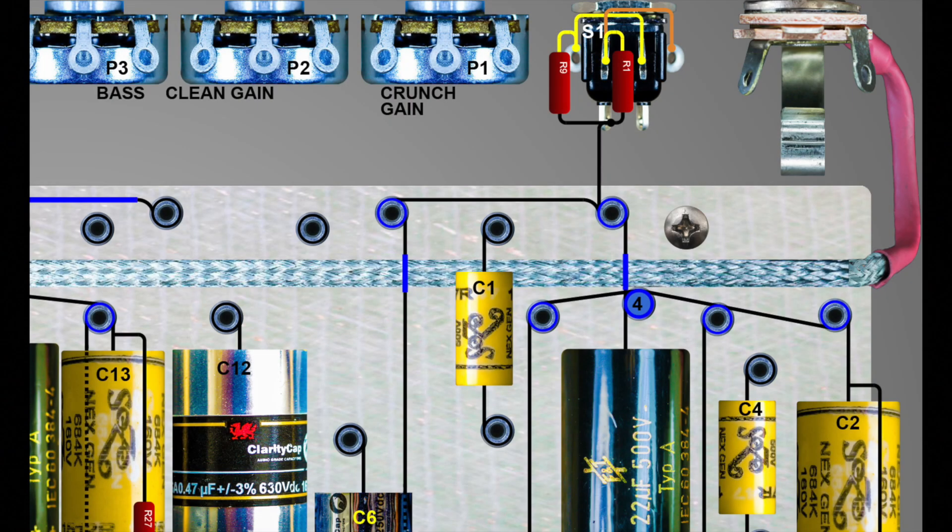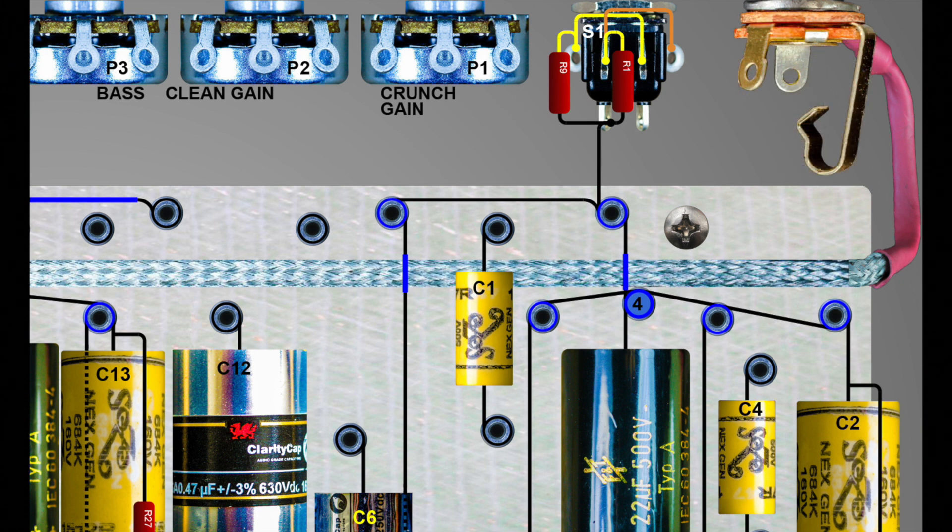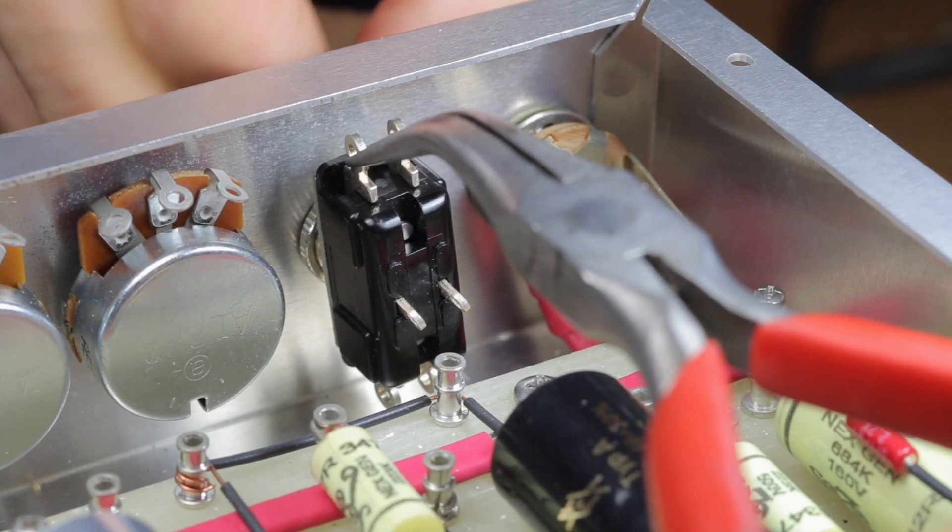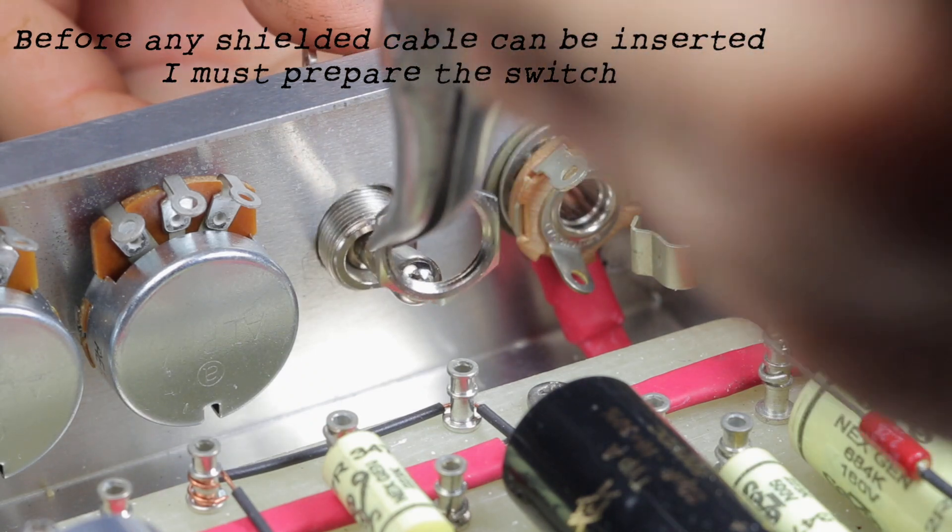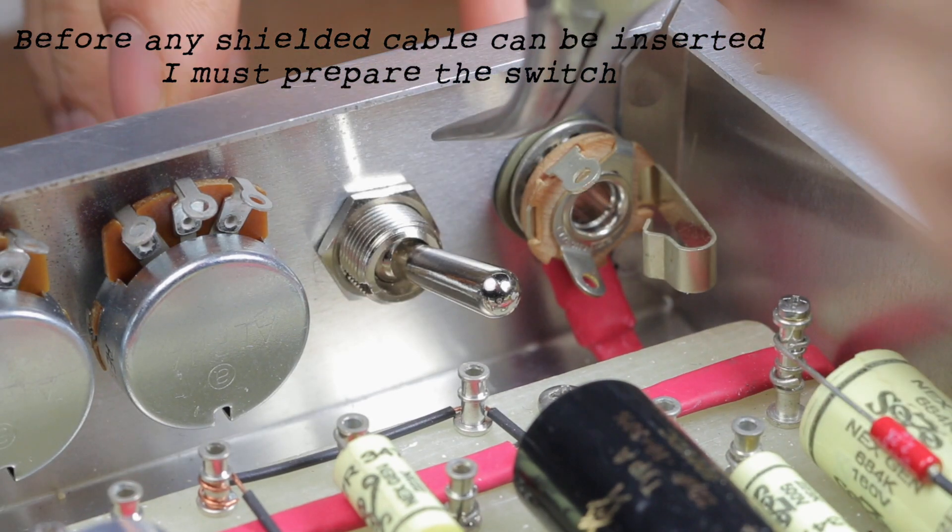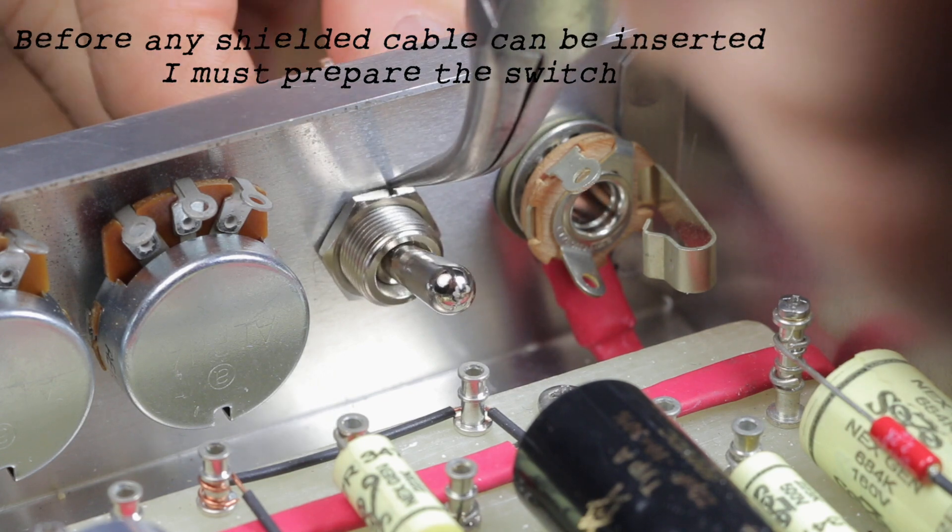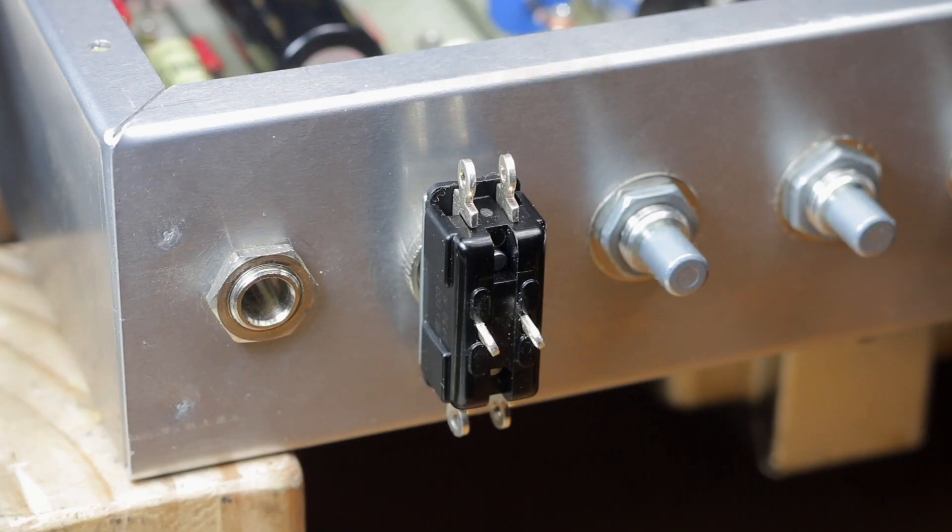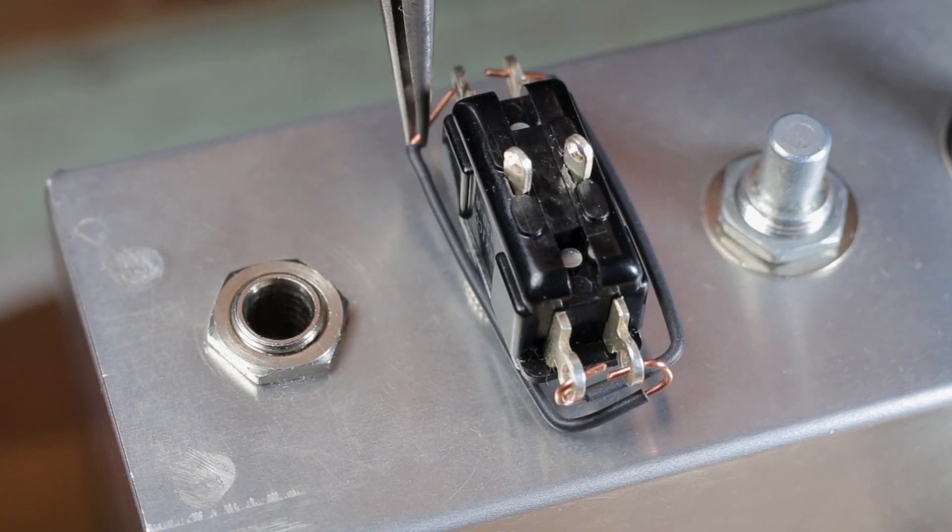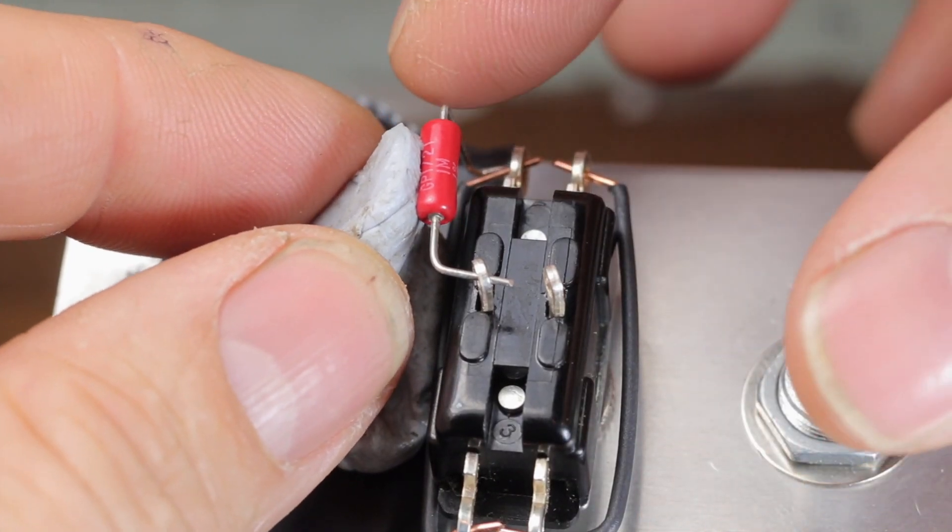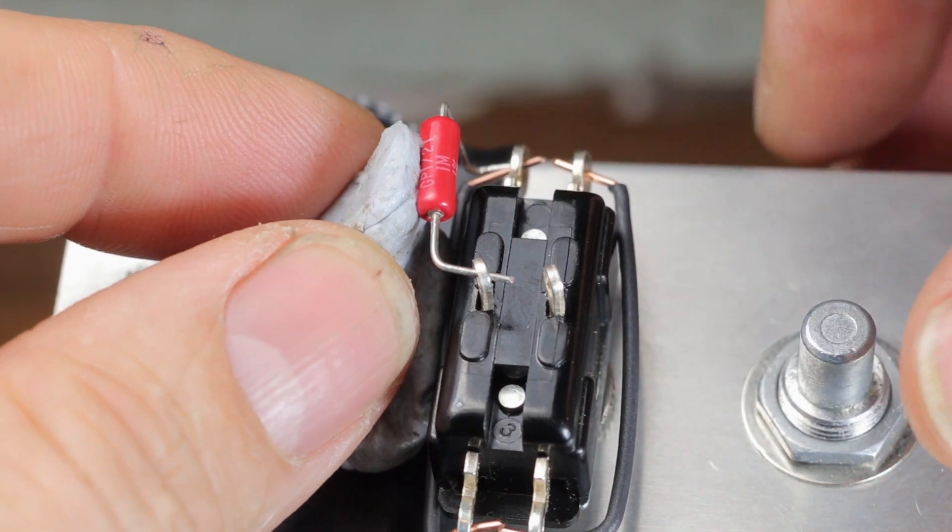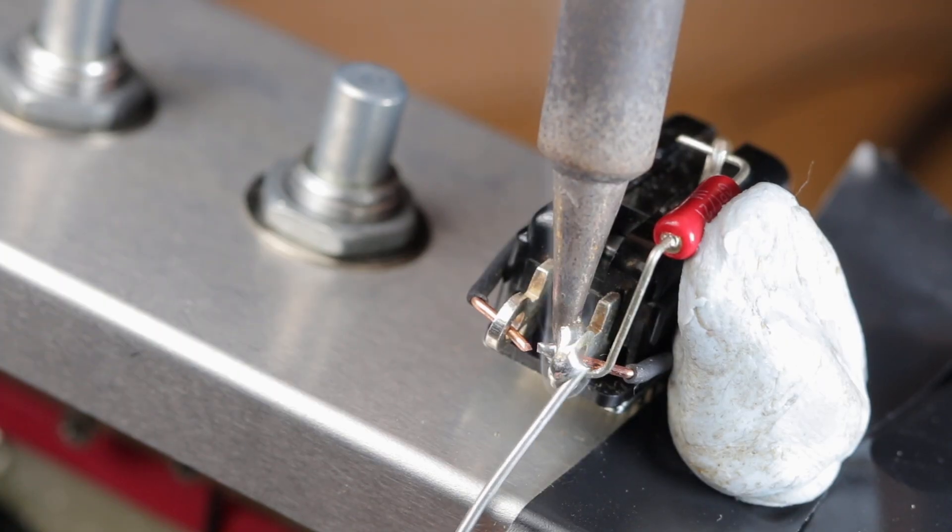Now is a good time to rotate the input jack 90 degrees just to make the lugs that much closer to the channel switch. I've got to sort out the switch and because there's no access inside the chassis, I take it out and mount it on the outside. Now I have plenty of room to work and I utilize sticky clay just to hold components in place for soldering.